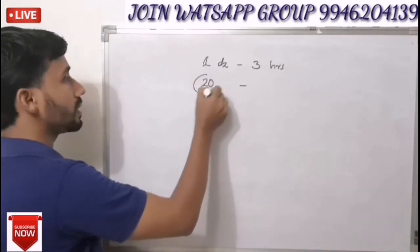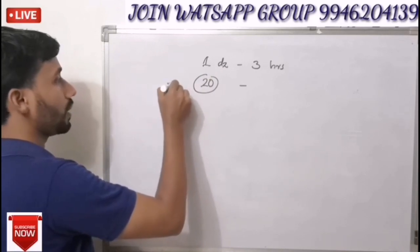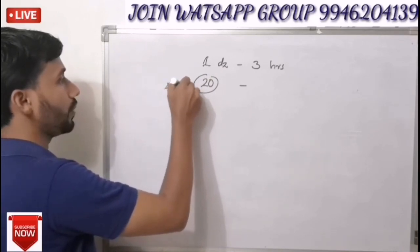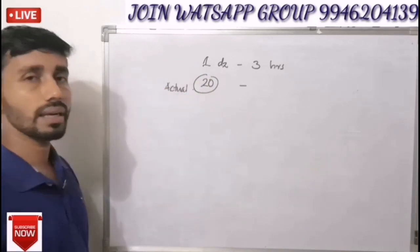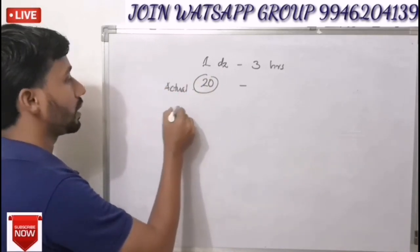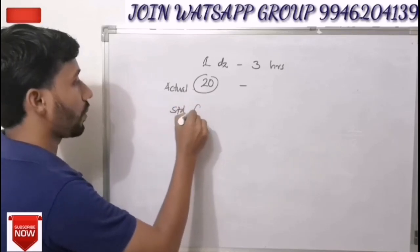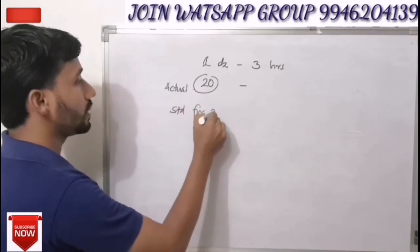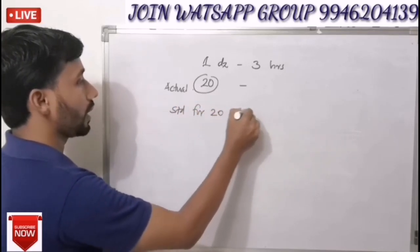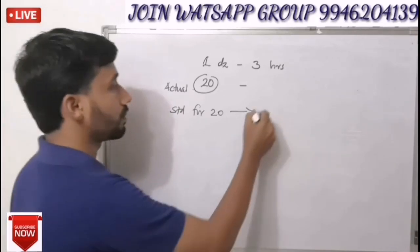We are actually producing 20 dozen, so we will convert the standard to 20 dozen. The standard for 20 dozen is 20 multiplied by 3 hours, which gives us 60 hours as the standard time for 20 dozen.